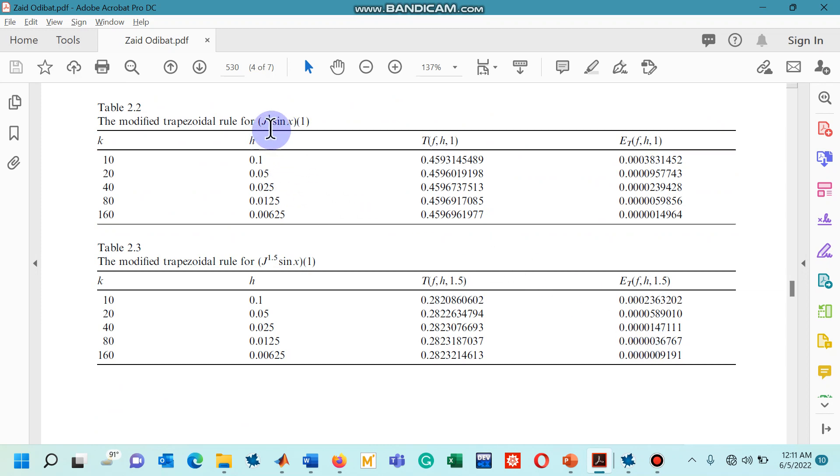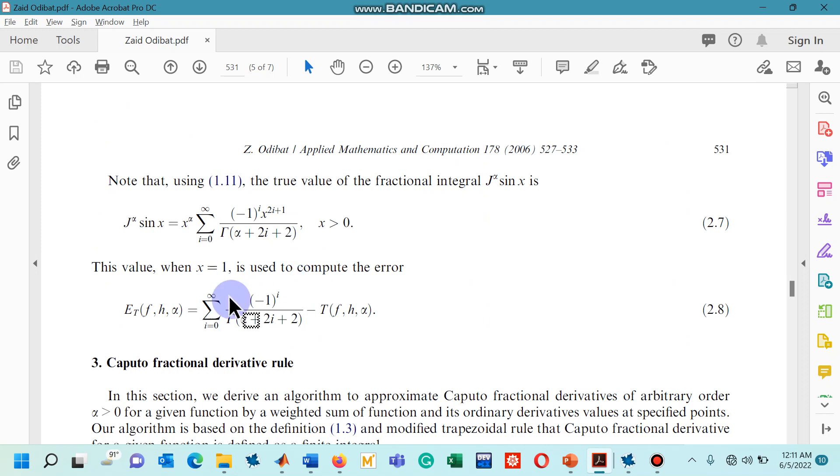In table 2.2, the order is taken to be 1 which is actually the classical case, and then in table 2.3, fractional order 1.5 is taken.